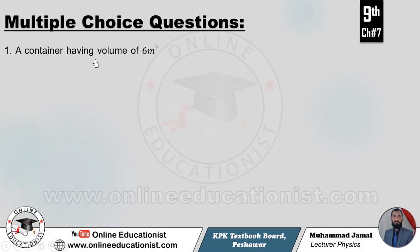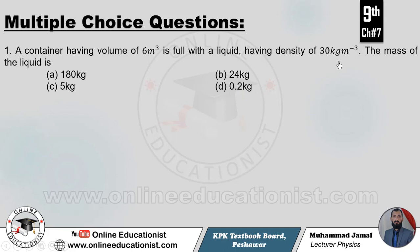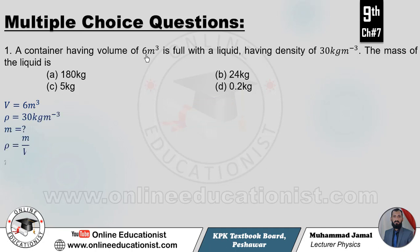First MCQ: A container having a volume of 6 cubic meters is full with a liquid having density of 30 kg per cubic meter. The mass of the liquid is to be calculated using volume and density. Formula: rho = m/v, so m = rho × v. Putting in the values: m = 30 × 6 = 180 kg.